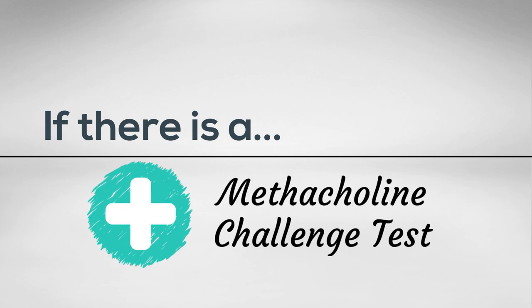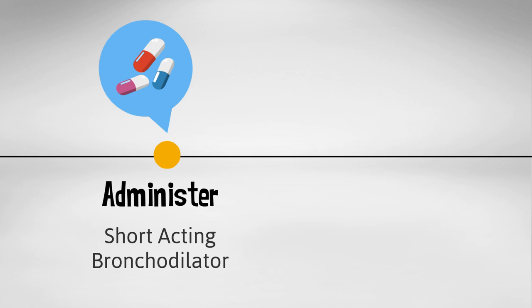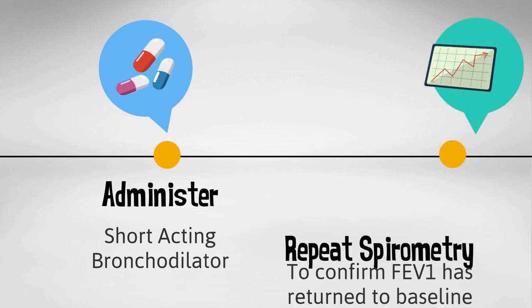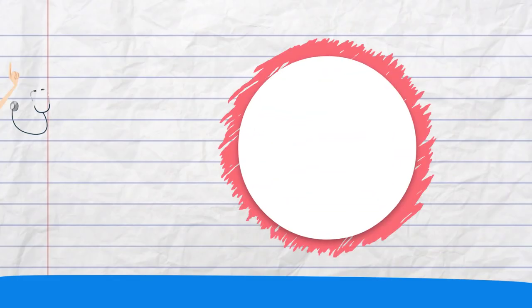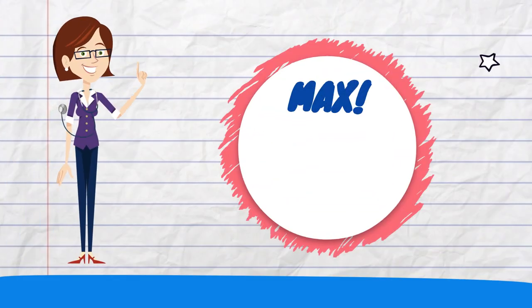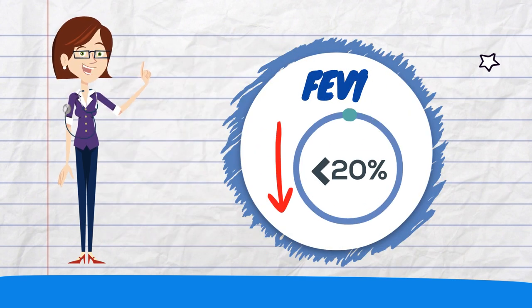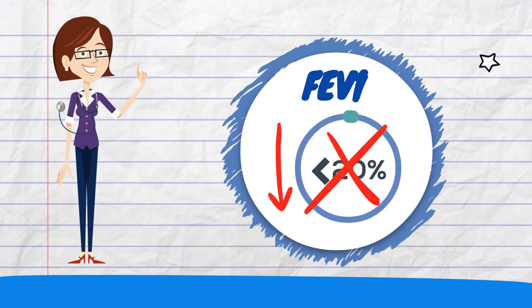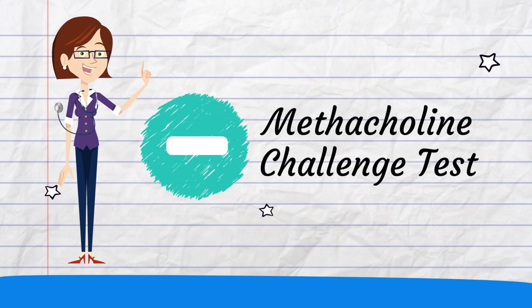If there is a positive methacholine challenge test, you stop, administer a short-acting bronchodilator, and after 5 to 10 minutes, repeat the spirometry to return the FEV1 to baseline. If you have reached the maximum dose and the patient's FEV1 has not decreased by 20%, the patient has a negative methacholine challenge test.